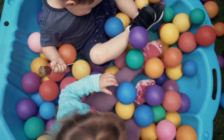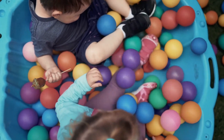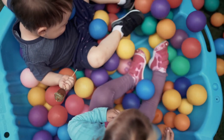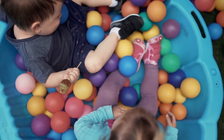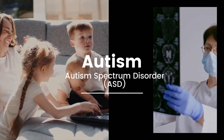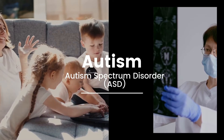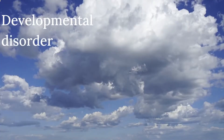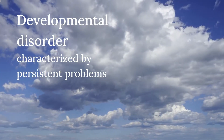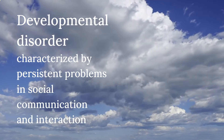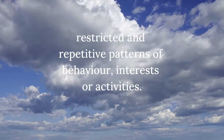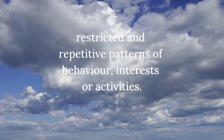Autism is a condition that affects the development of certain areas of the brain. But what exactly is autism? Autism, also called autism spectrum disorder, is a developmental disorder characterized by persistent problems in social communication and interaction, along with restricted and repetitive patterns of behavior, interest, or activities.